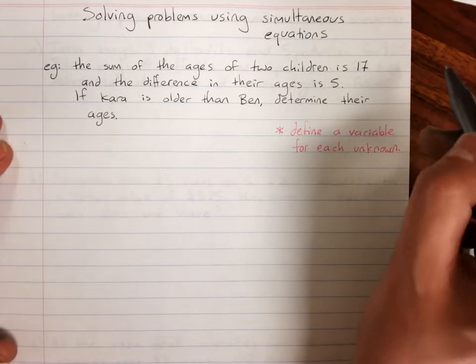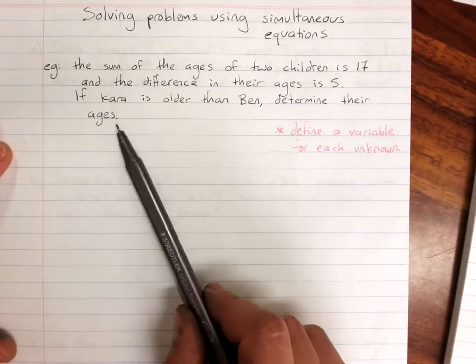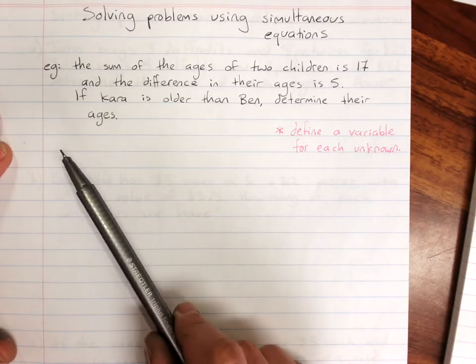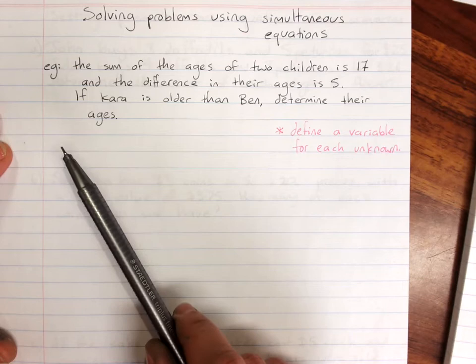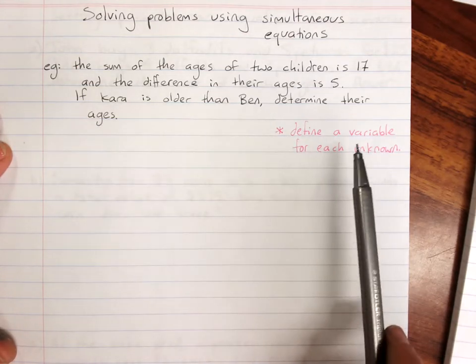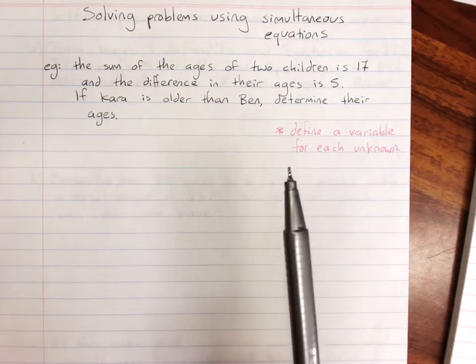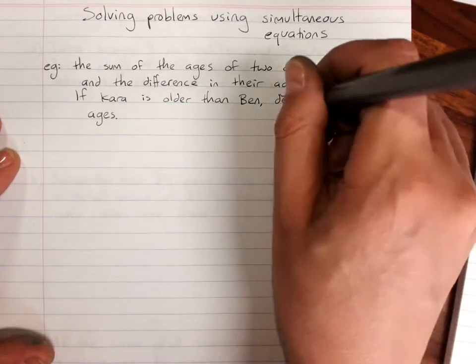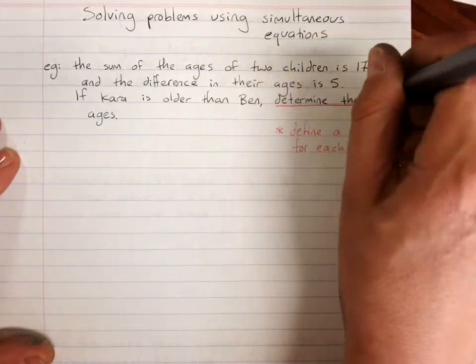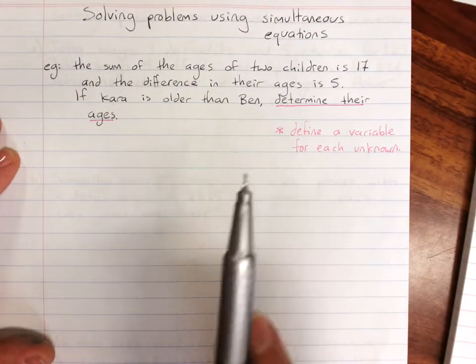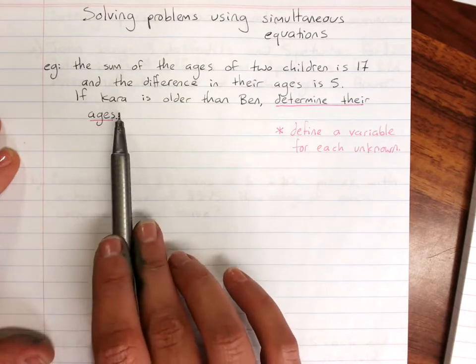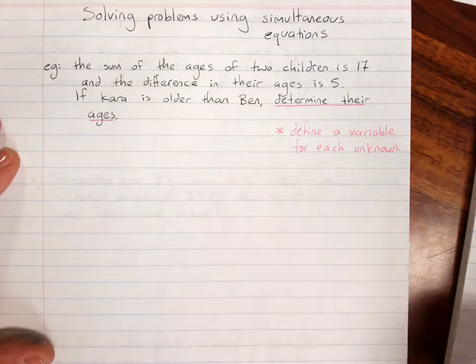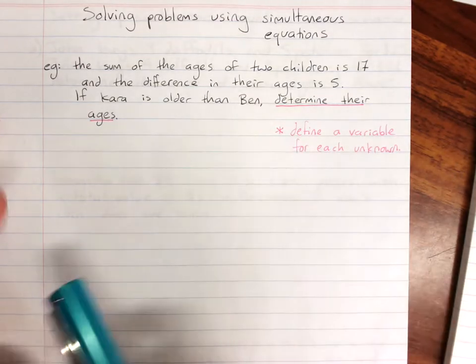I can almost guarantee you, and this is a definite error, that one of you will say K equals Kara, B equals Ben. That's still wrong even if you say X equals Kara, Y equals Ben. You must very exactly define your variable. And the variables are usually actually given to you in the question because the question says determine their ages. So that says that one variable is Kara's age and one variable is Ben's age.